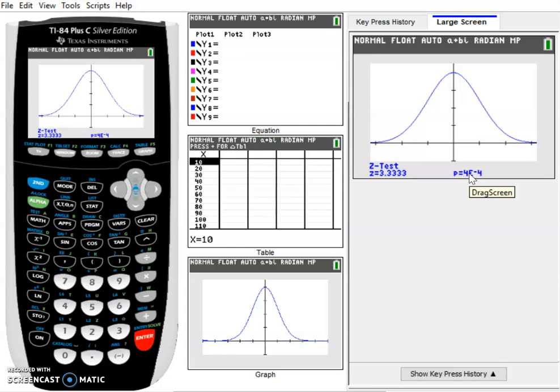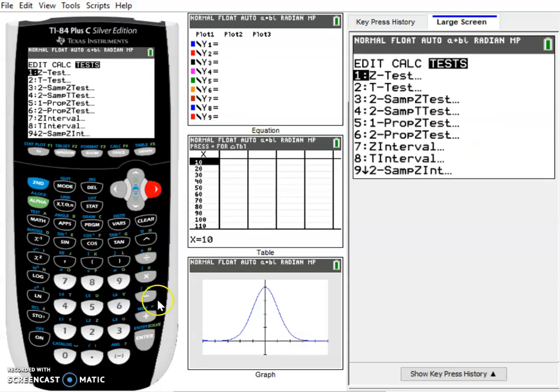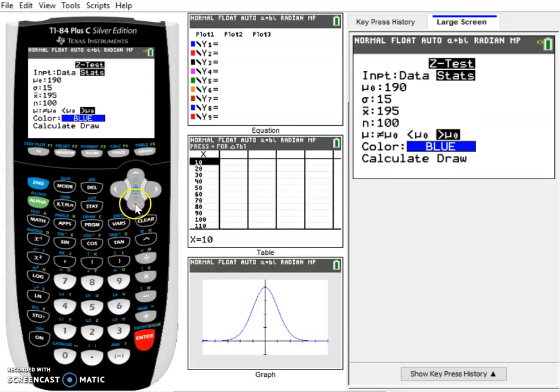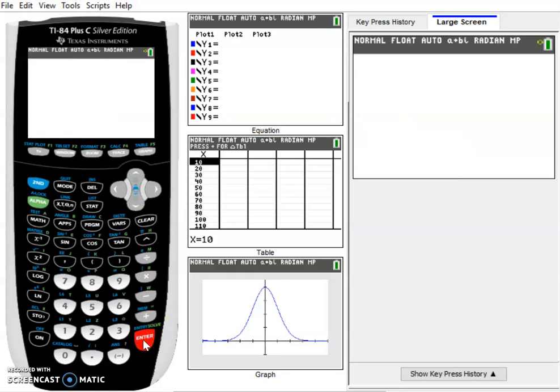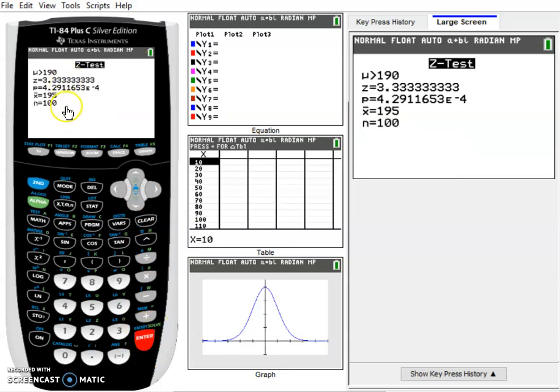If we select calculate instead and leave all our settings the same, it will give us a slightly more specific p-value. But again, this e to the negative 4 is very important. 4.29 is not a probability value; 4.29 times 10 to the negative 4 is a probability value.